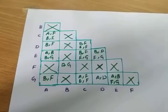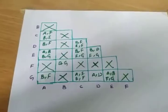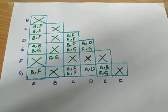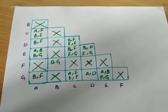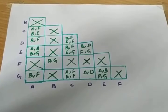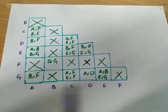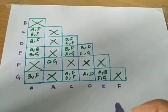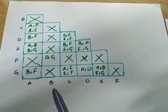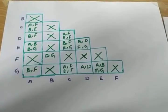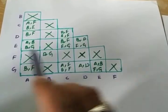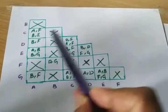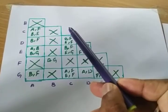In the previous lecture I discussed about the implication chart. We drew the first pass. Now we need to check for the second pass.